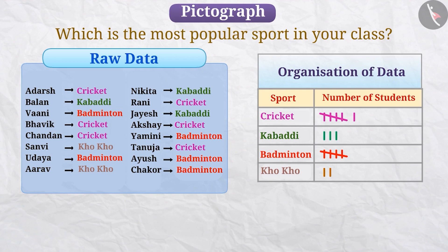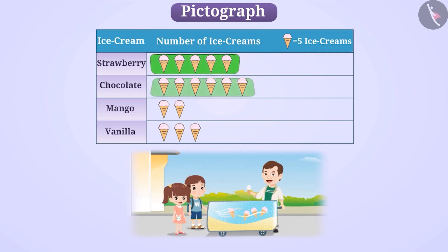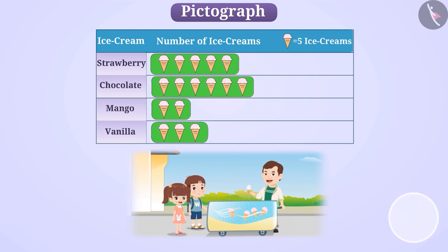Today we will understand an interesting way to represent data. Look at this table. In this table, the ice cream vendor has shown the name and the number of ice creams sold. Pause the video and try to understand it.